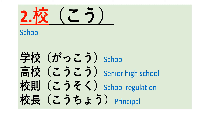Now in the second kanji, there is a radical attached on the left side. This radical is known as 'ki,' which means tree — this is the kanji for tree. So the meaning of this kanji is school.